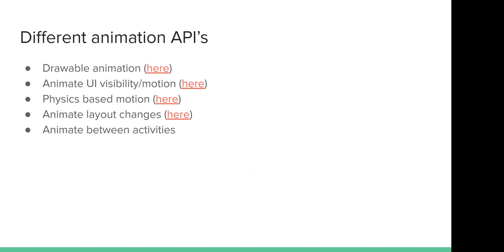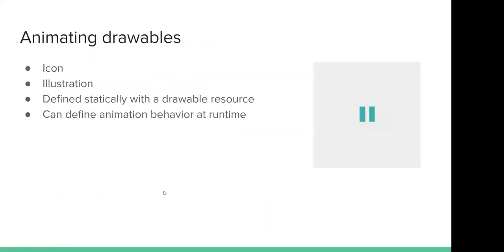Android includes different animation APIs depending on what type of animation you want. There are different APIs for animating drawables, for changing or animating UI visibility or motion, physics-based motion, animating layer changes, and animating between activities. As you can see, there are many things you can animate in Android, and I've included links to the relevant documentation.